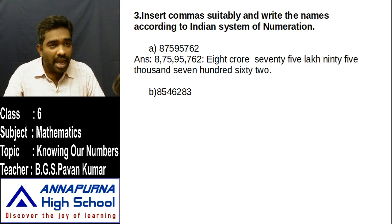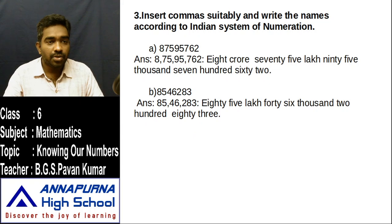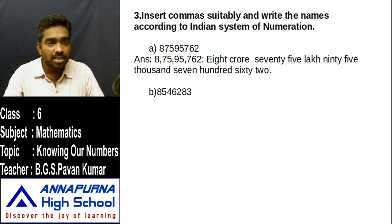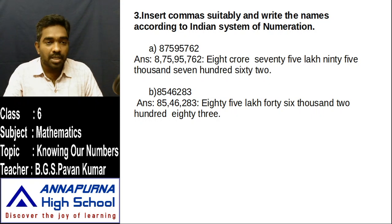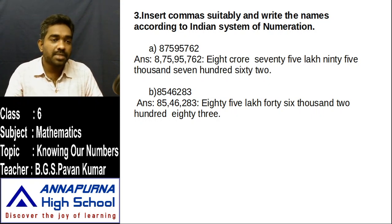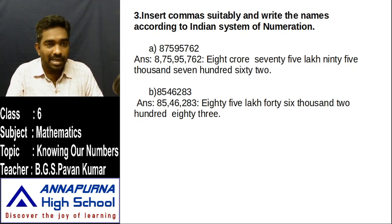Next one: 8546283. Insert commas — first comma after ones period, next comma after thousands period. Answer: 85,46,283 — eighty-five lakh forty-six thousand two hundred eighty-three.